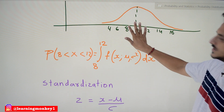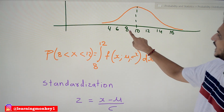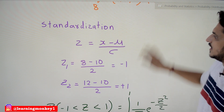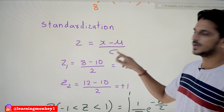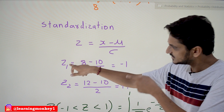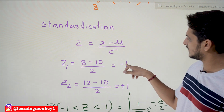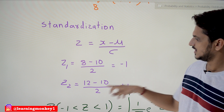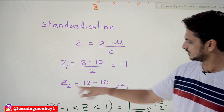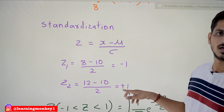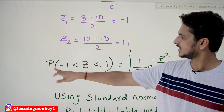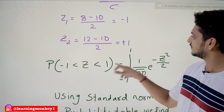This conversion is what standardizing means. We convert the random variable X into standard normal random variable Z. The formula is Z = (X − μ) / σ. Taking our values: Z₁ = (8 − 10) / 2 = −1, and Z₂ = (12 − 10) / 2 = +1.